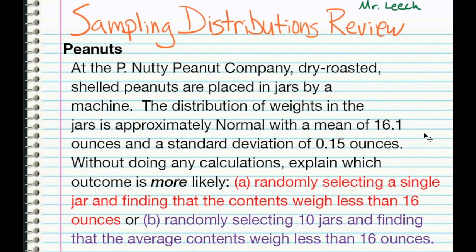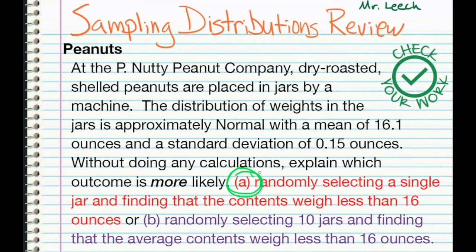Here's our peanut question again. Before we actually answer the question, I just have something that we need to think about. Now, if you look right here where it says, without doing any calculations, explain which outcome is more likely. And we have two options. Option A, randomly selecting a single jar and finding that the contents weigh less than 16 ounces. Or B, randomly selecting 10 jars and finding that the average contents weigh less than 16 ounces. So take a second, don't do any calculations, and think about this. So which one is going to be more likely? Definitely A. This is actually going to be more likely.